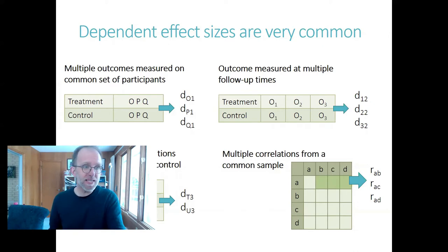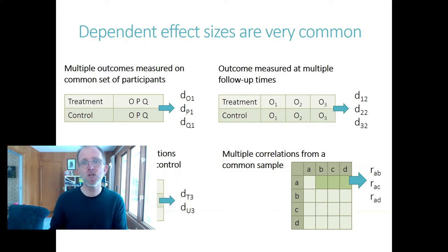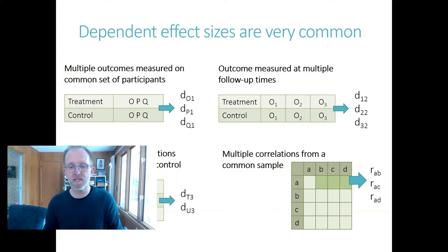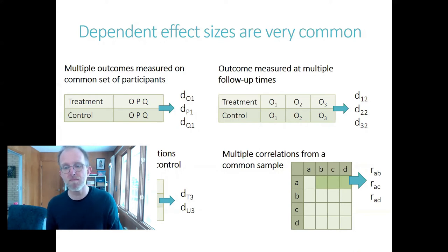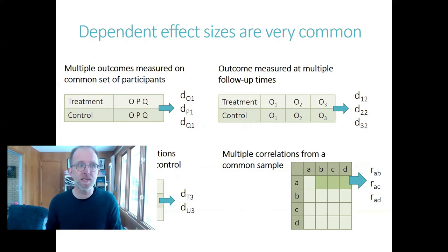It's easy enough to extract data to get these multiple effect sizes from your source studies, but the problem is that it's often difficult to get information about the extent of the dependence between the effect sizes, such as the degree of correlation between multiple outcomes measured on the same set of participants. And not having that information makes it more challenging to do a defensible synthesis.